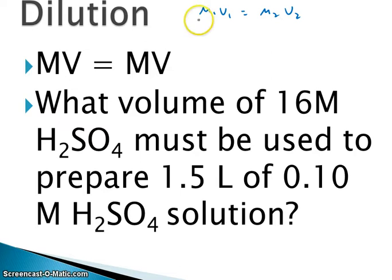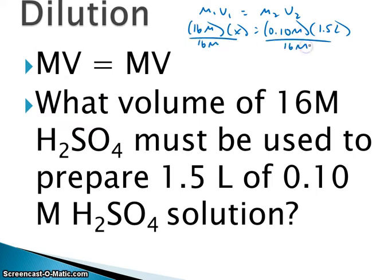So our original solution starts out as 16 molar. And we want to know what volume of that 16 molar sulfuric acid do we need. We want to end up with 0.10 molar and we want 1.5 liters of it. So what volume of 16 molar stock solution do we need to make 1.5 liters of 0.10 molar? So we're going to divide both sides by 16 molar.